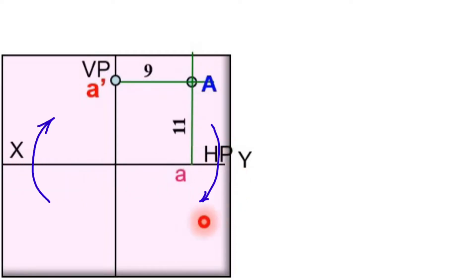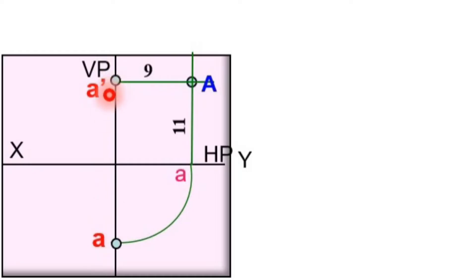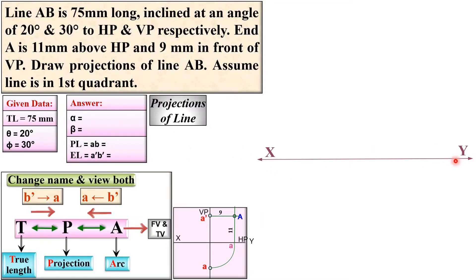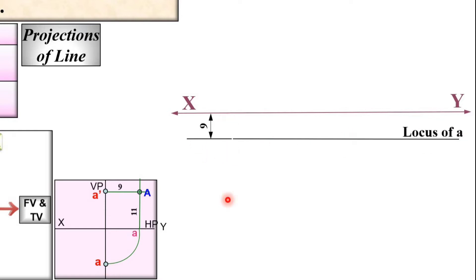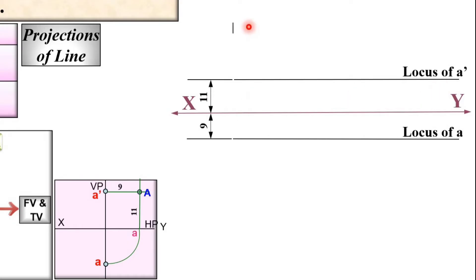The horizontal plane is always rotated 90 degrees clockwise, so point A moves to its projected position. This is the projection of point A. With this, you can set up the reference line XY for the projection of the line. The distance of 9 mm below XY gives the locus of A, and 11 mm above XY gives the locus of A'. Take a vertical reference line to locate A' and A. Up to here, we have located the position of point A.